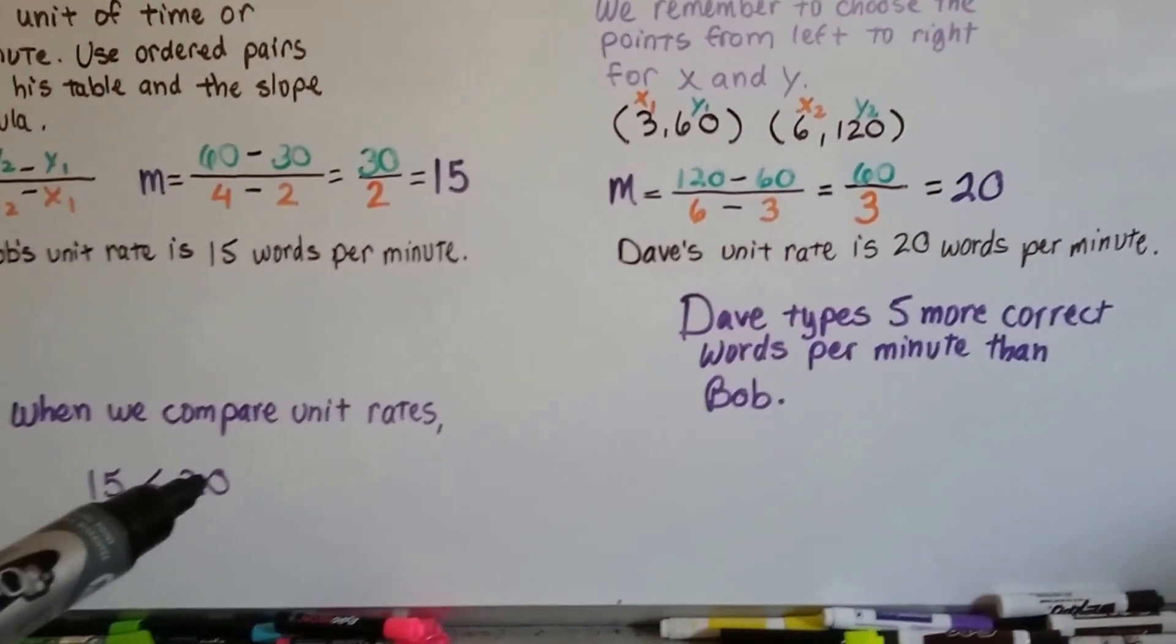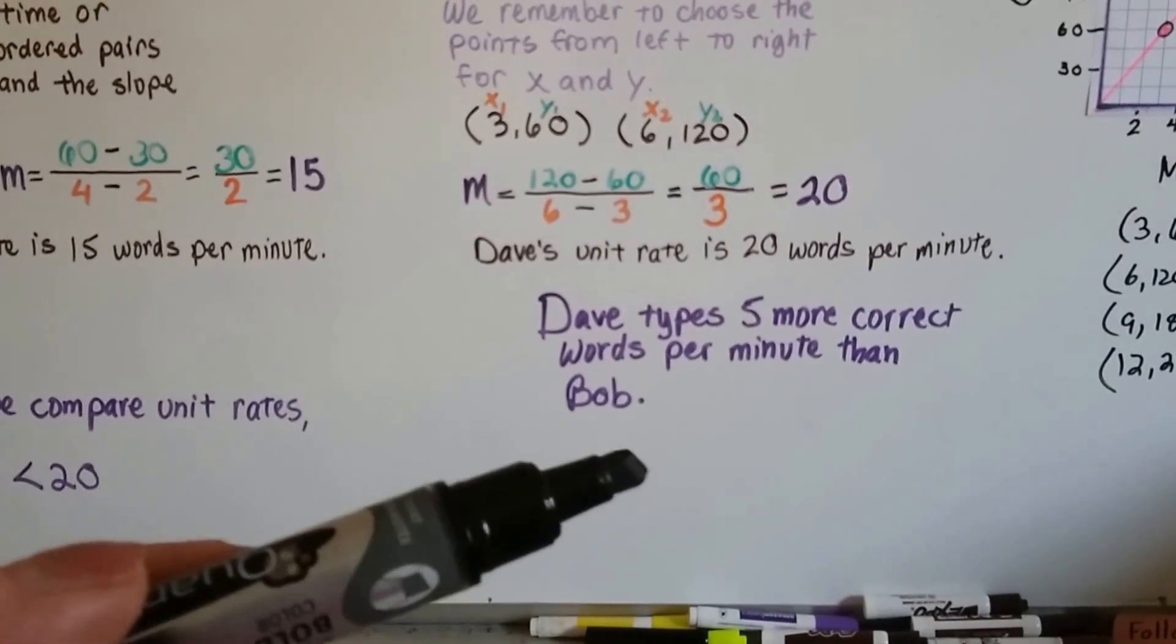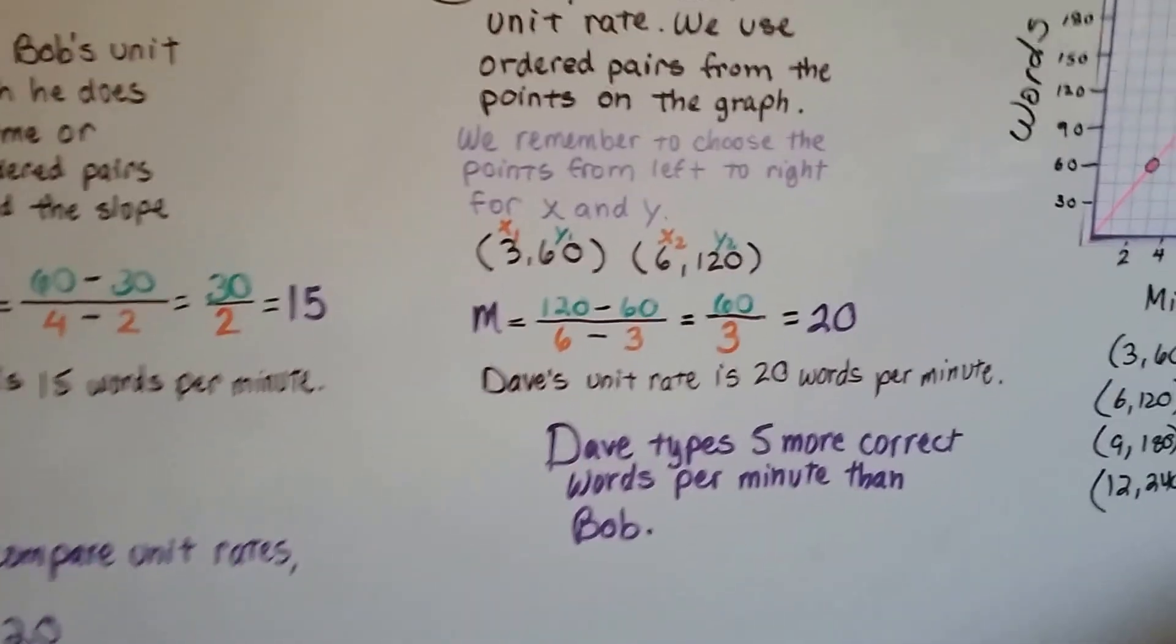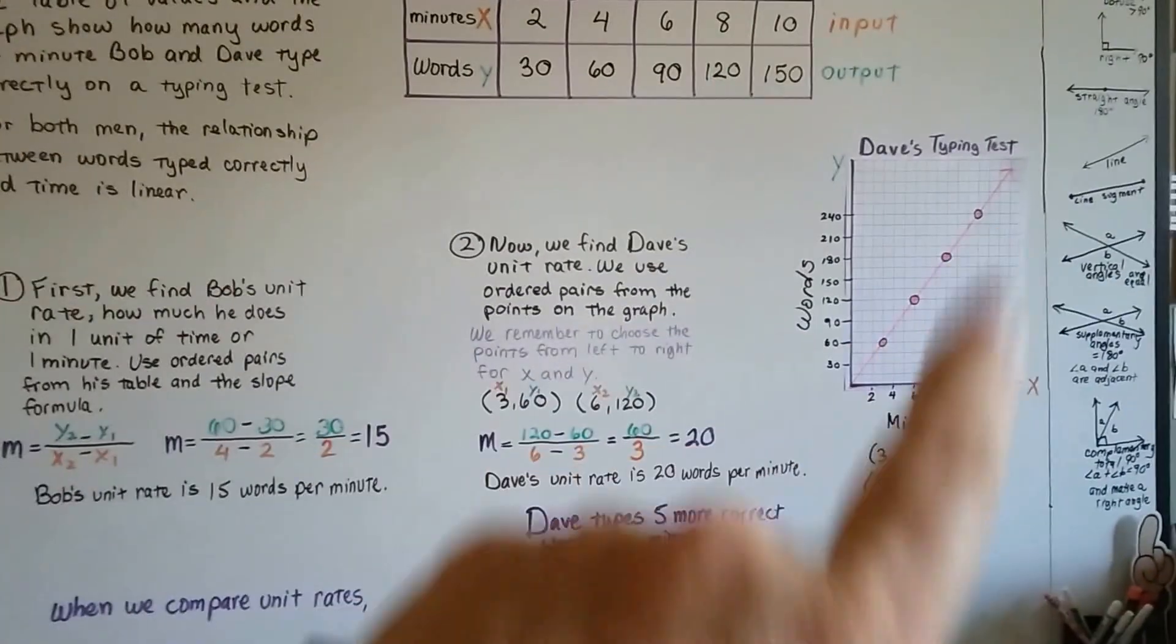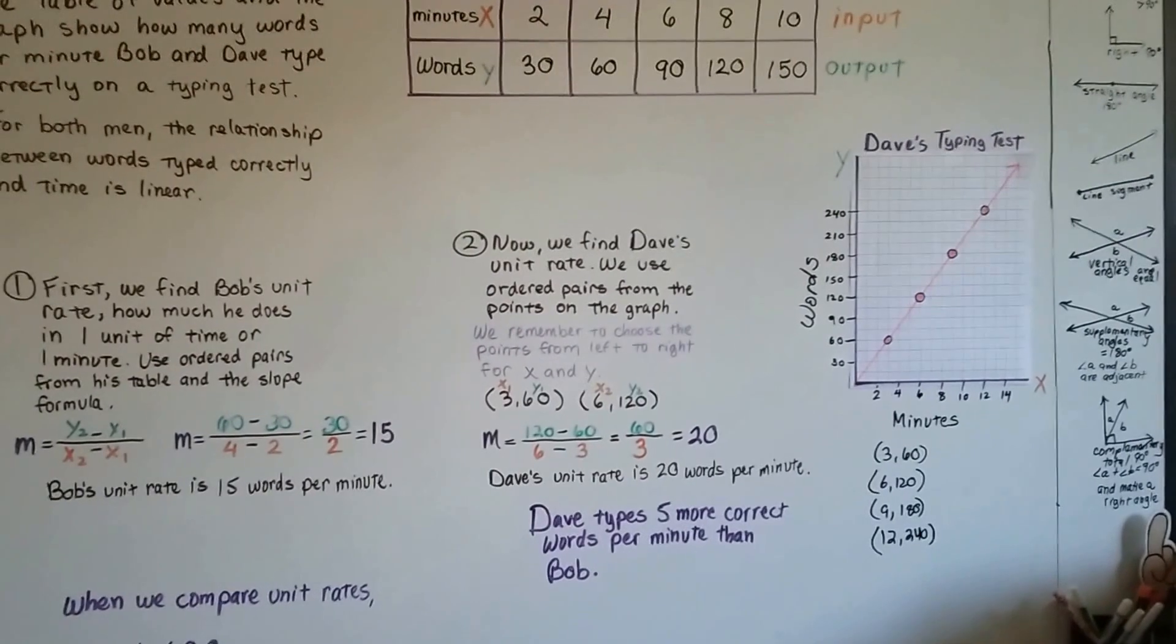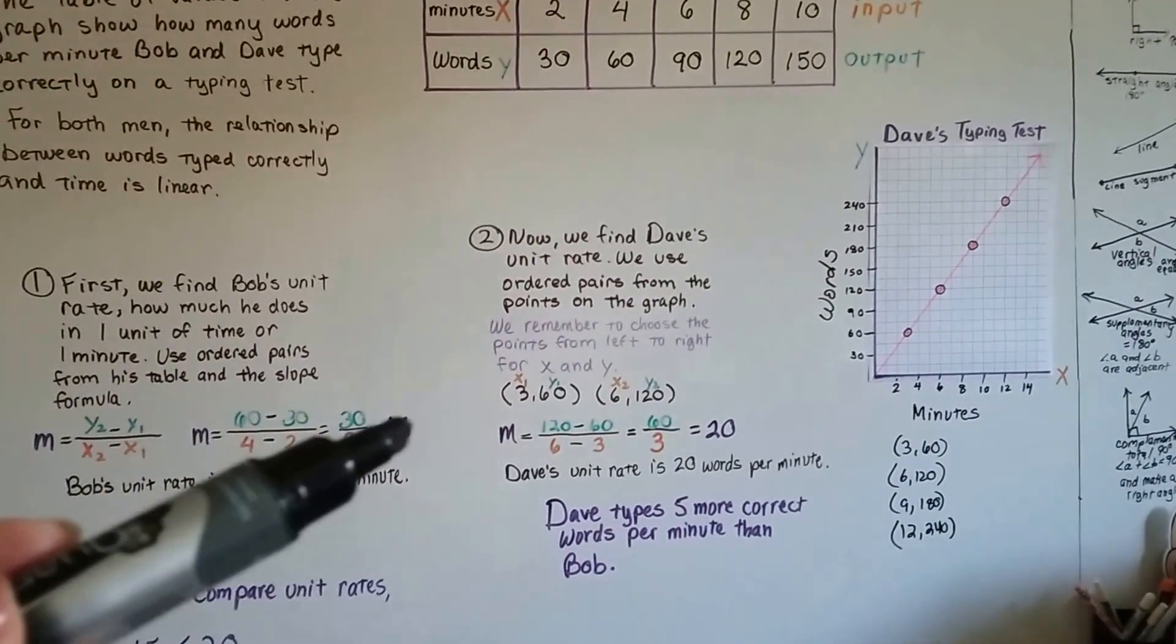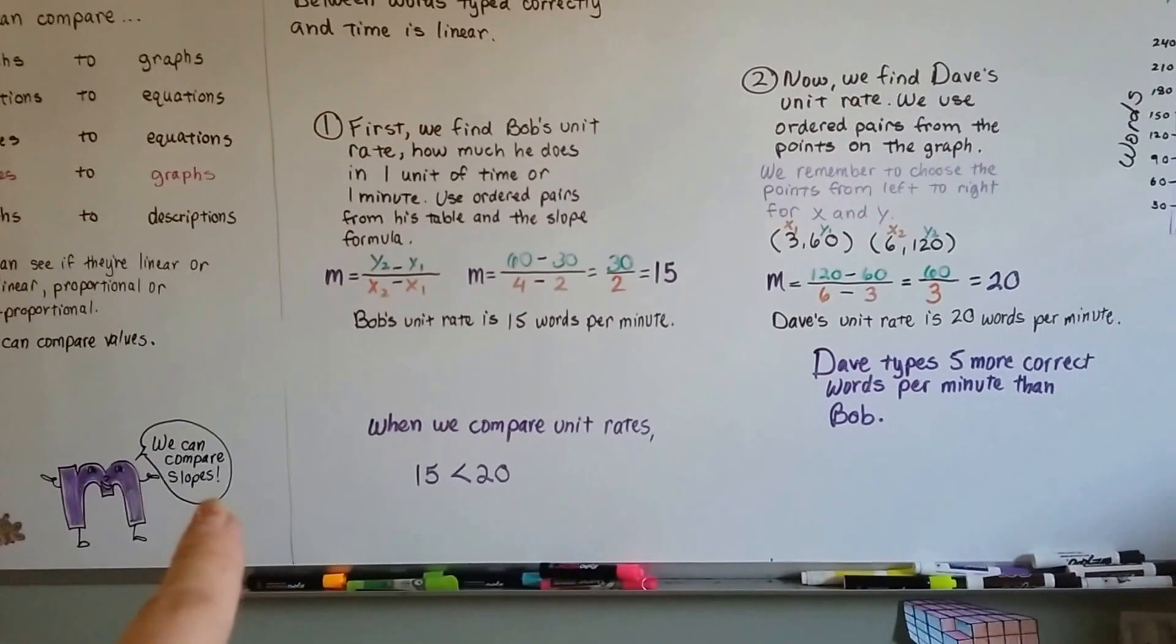So when we compare the unit rates, we can see that 15 is less than 20. So Dave types 5 more correct words per minute than Bob. So we were able to pull the information from this table and from that graph as ordered pairs, and we were able to use the slope formula to pull the slope and compare them. We compared slopes.